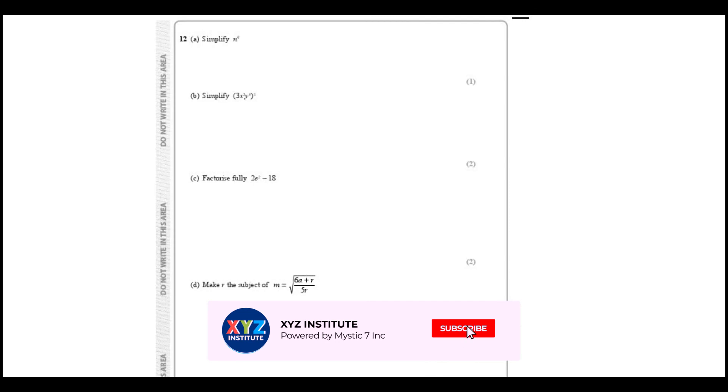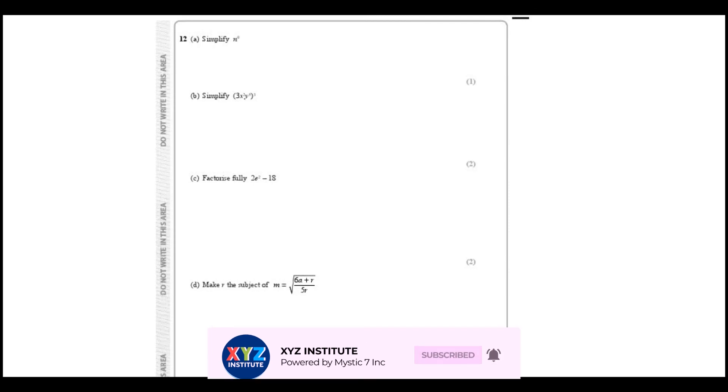Question number 12: simplify n to the power 0. The basic rule here is any number to the power of 0 is 1, so simplify n to the power 0 is simply going to be 1.